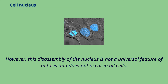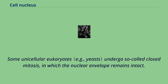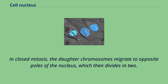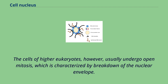Some unicellular eukaryotes undergo so-called closed mitosis, in which the nuclear envelope remains intact. In closed mitosis, the daughter chromosomes migrate to opposite poles of the nucleus, which then divides in two. The cells of higher eukaryotes, however, usually undergo open mitosis, which is characterized by breakdown of the nuclear envelope. The daughter chromosomes then migrate to opposite poles of the mitotic spindle, and new nuclei reassemble around them.